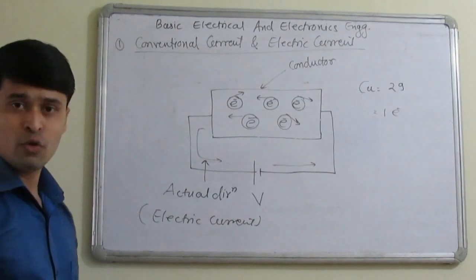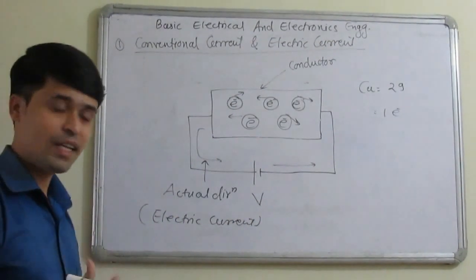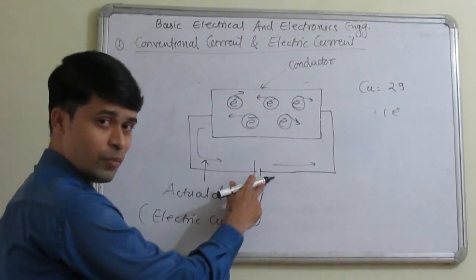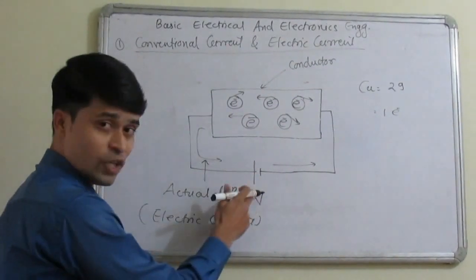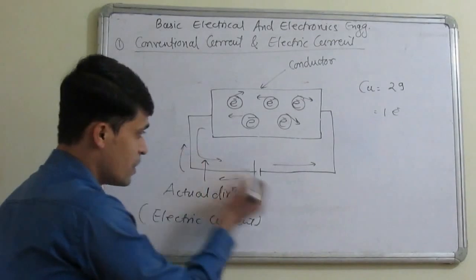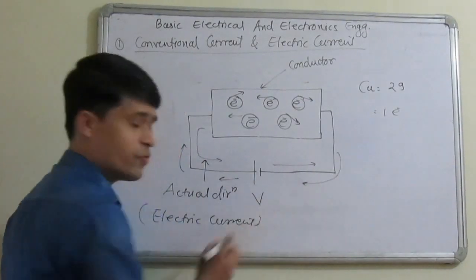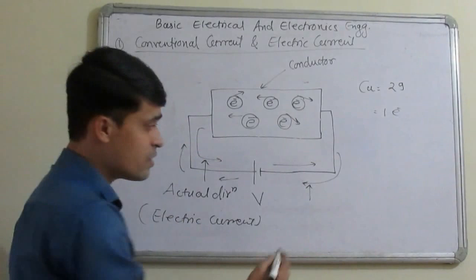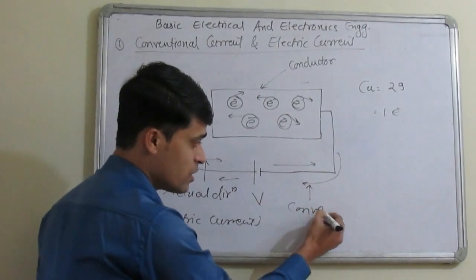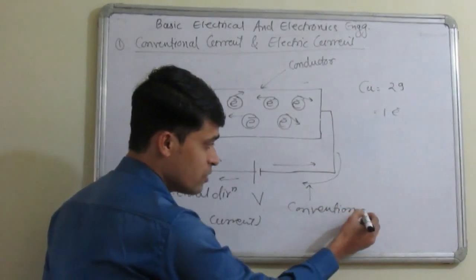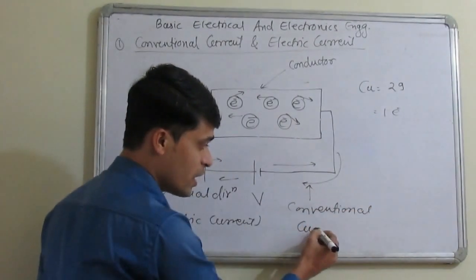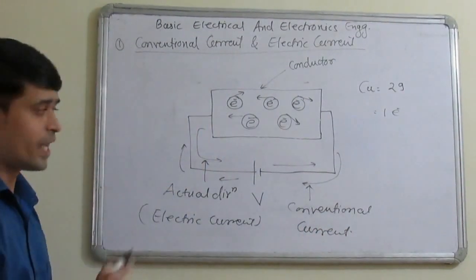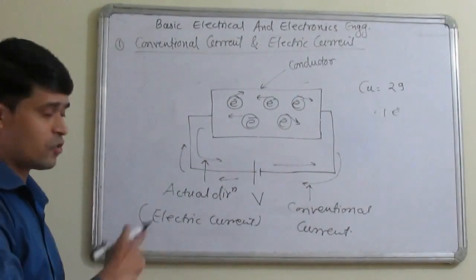But during solving the problems, we are considering the current direction is from positive terminal to the negative terminal. This direction, during solving the problems, we are considering, so this direction of the current we are calling it as conventional flow or conventional current. This is the difference between the actual current or electric current and conventional current.